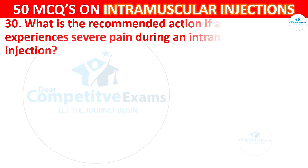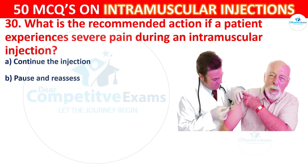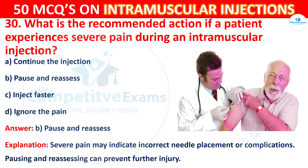Question 30: What is the recommended action if a patient experiences severe pain during an intramuscular injection? Options are: continue the injection, pause and reassess, inject faster, or ignore the pain. The correct answer is B, pause and reassess. Severe pain may indicate incorrect needle placement or complications. Pausing and reassessing can prevent further injury.